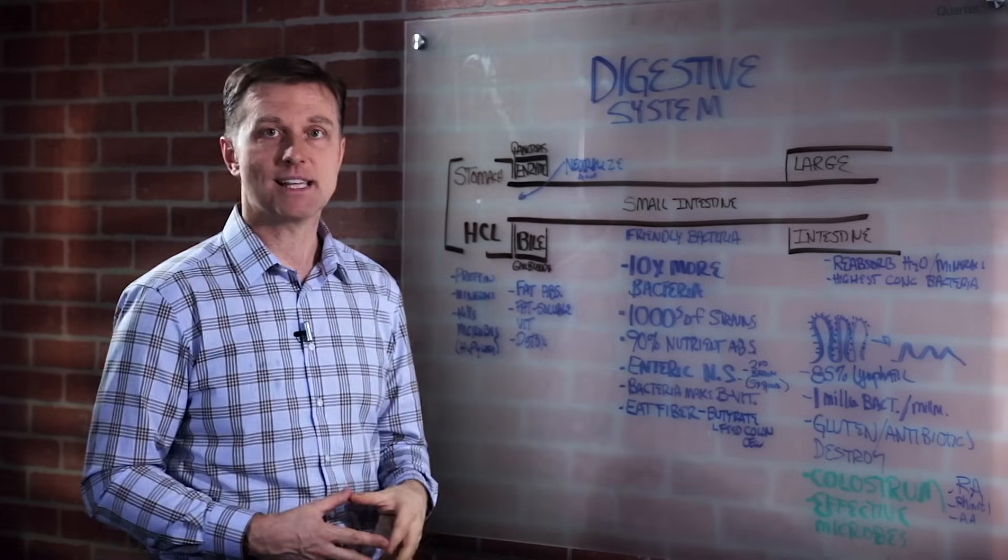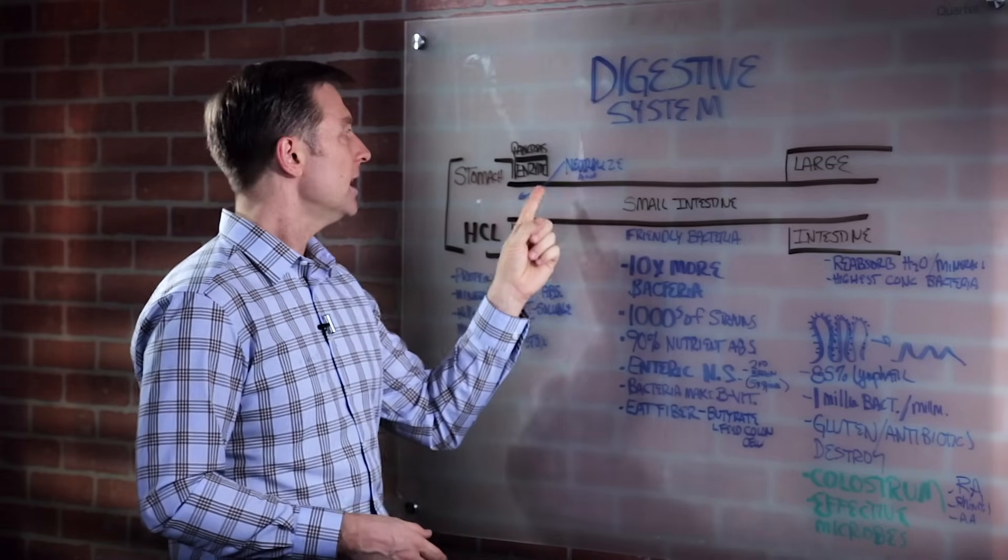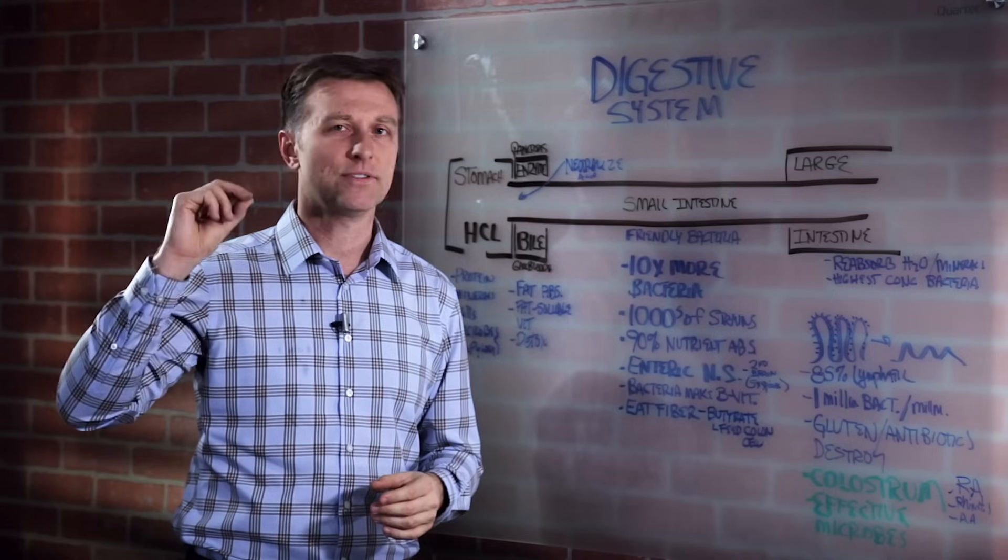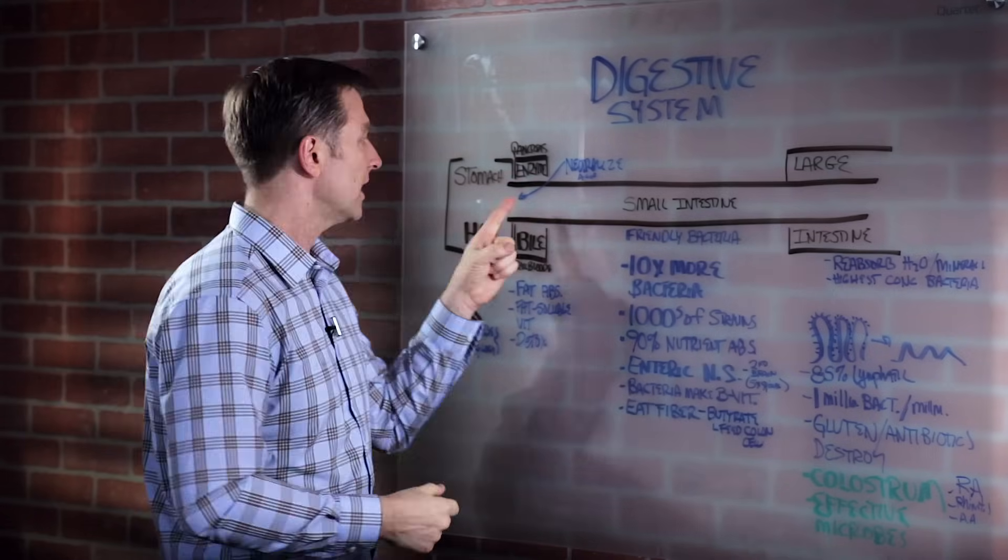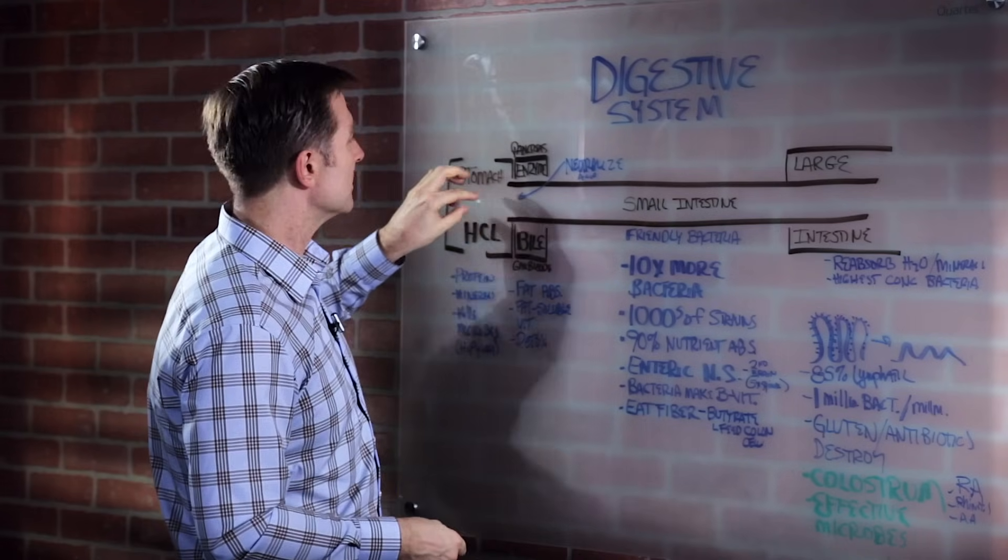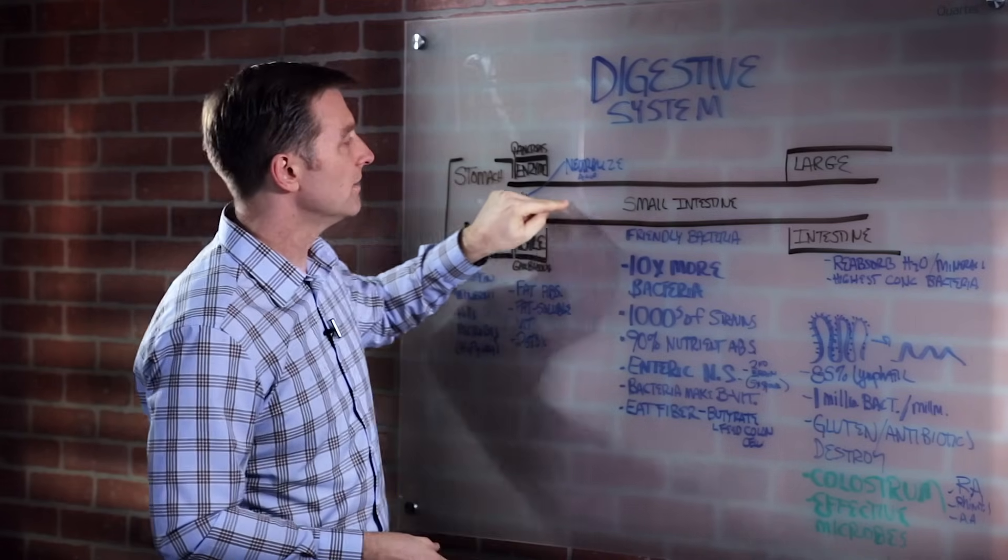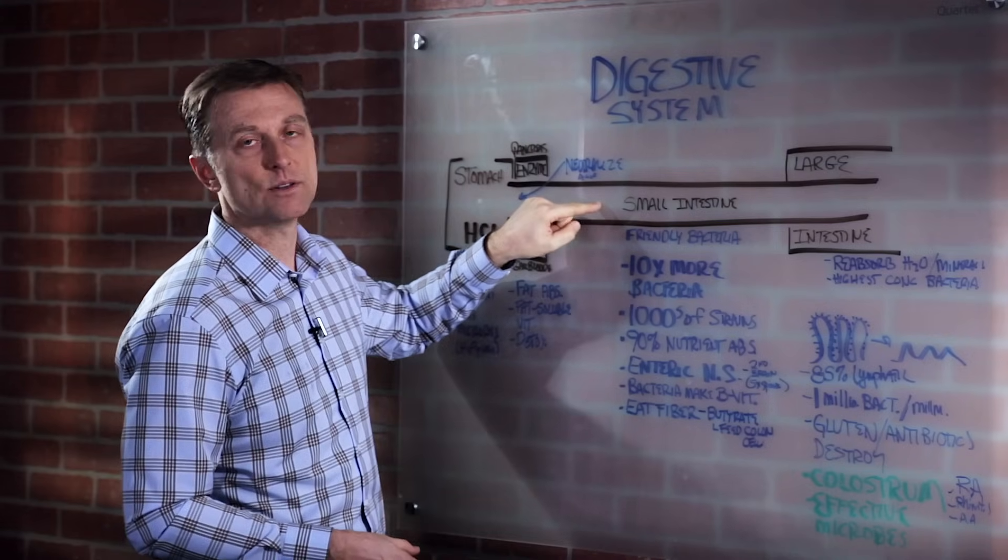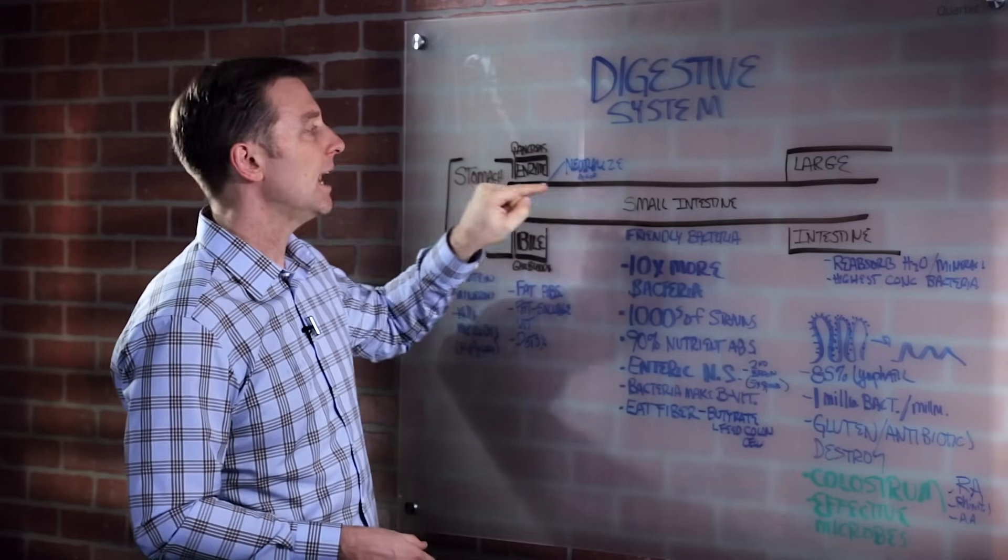So if we didn't have the bile, we couldn't neutralize that and you would get an ulcer in your small intestine. And then we have the pancreas that also makes this other alkaline fluid called bicarbonate that helps neutralize the acid at this point too. So we go from a strong acid to a very alkaline fluid inside the small intestine.